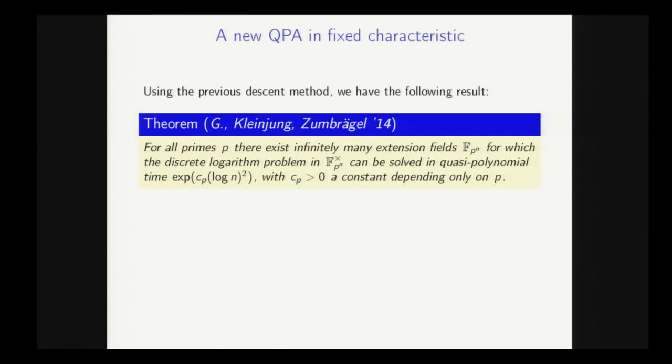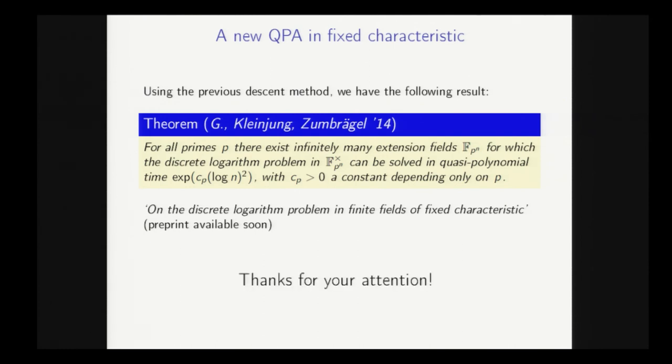And so we get a new QPA in fixed characteristic. And interestingly, because this method, this descent method, is very algebraic, we can actually argue that it relies on no heuristics whatsoever. As soon as we have a field representation where the degree of HIs is at most 2, then this works. And so we get a theorem. I've run out of time, but I'll quickly say it. So for all primes p, there exist infinitely many extensions, Fp to the n, for which the DLP in this field can be solved in quasi-polynomial time. And this is the preprint, which will be available very soon. And thanks for your attention.